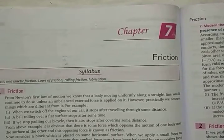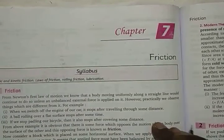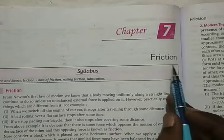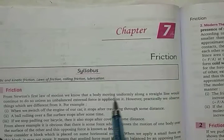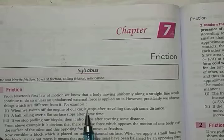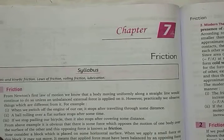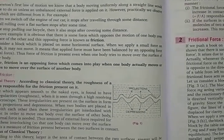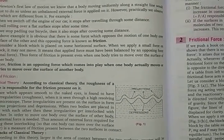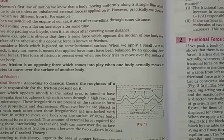Hello students, we are going to take a quick review on the next chapter, chapter number 7, that is friction. Remember, this is also a part of laws of motion — it is the second part of laws of motion. Friction is the opposing force given to a body which is already given an external force.